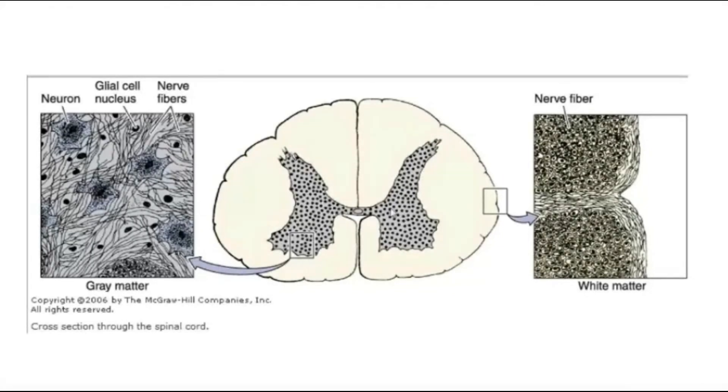So, you can see here the grey matter is only the nerve cell body. Whereas, this white part is basically where we have nerve fibers and it forms white matter. And these nerve fibers form very important tracts in spinal cord.